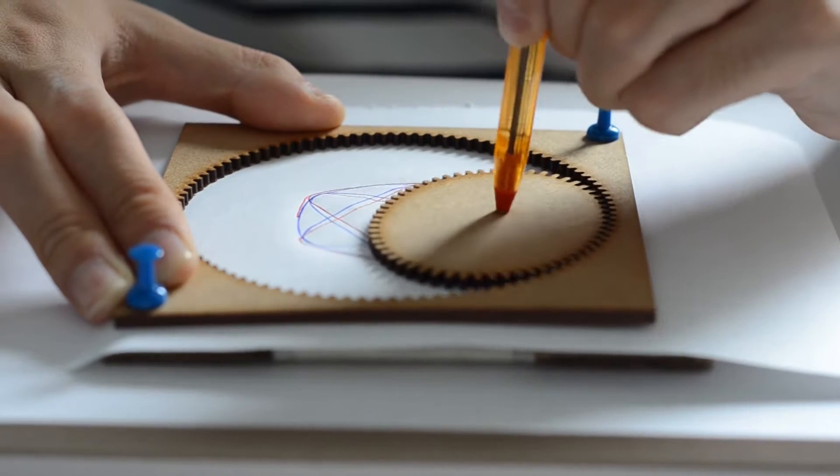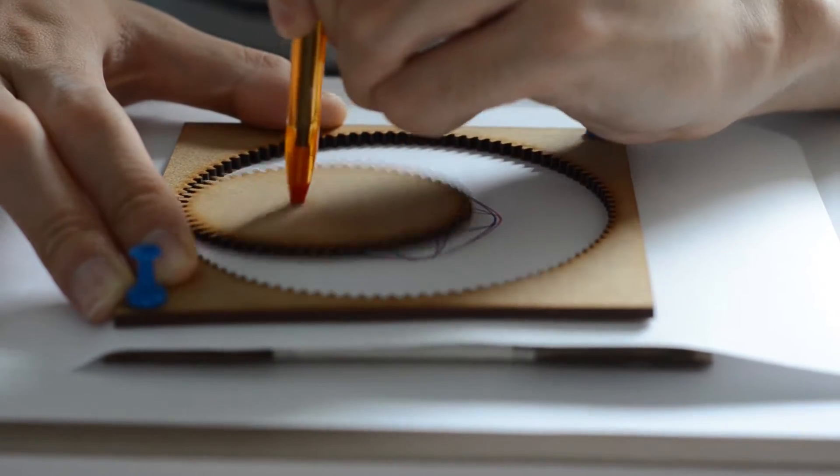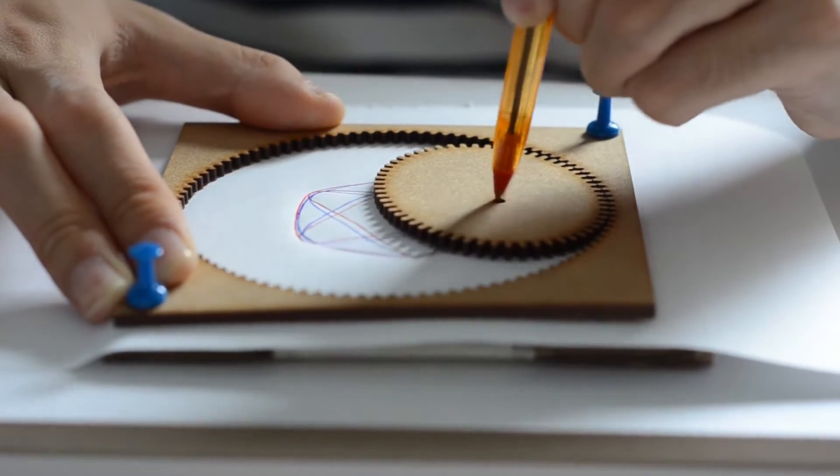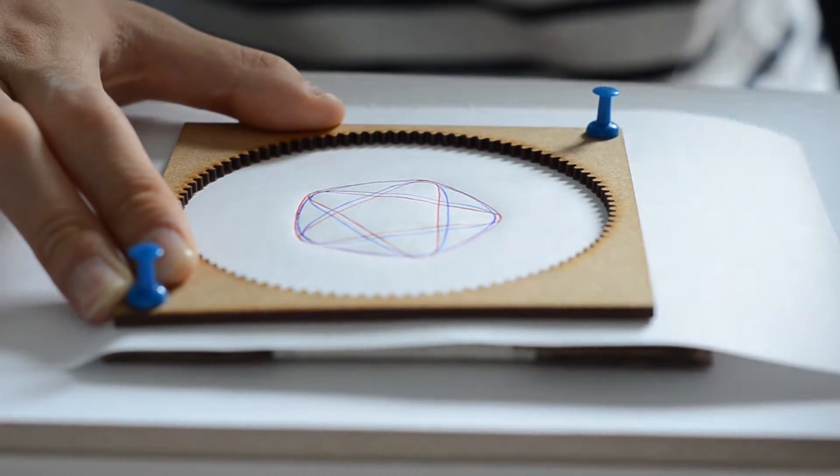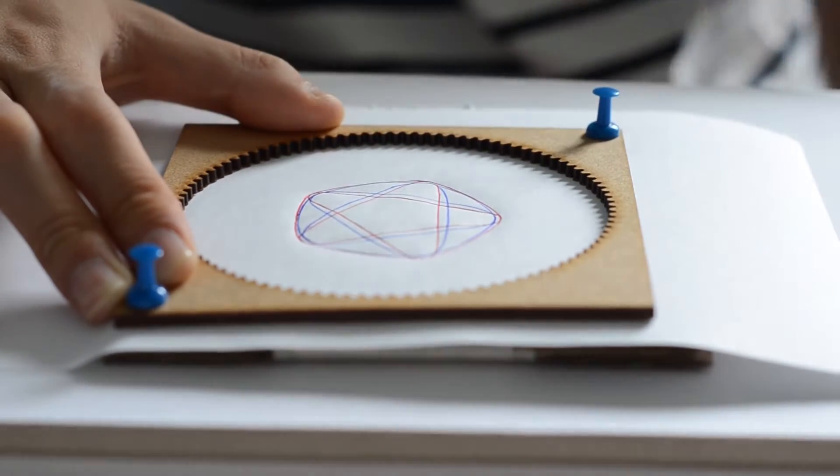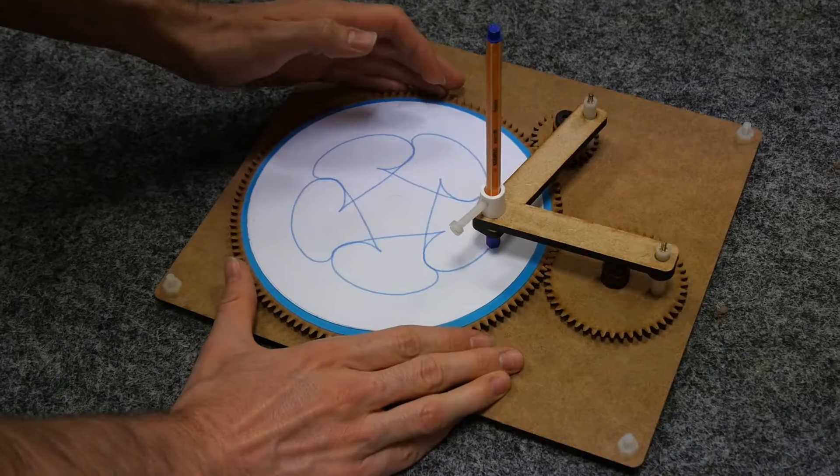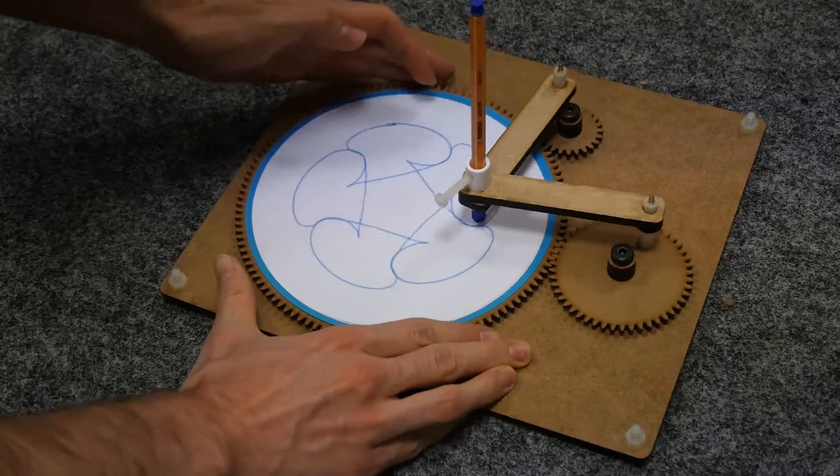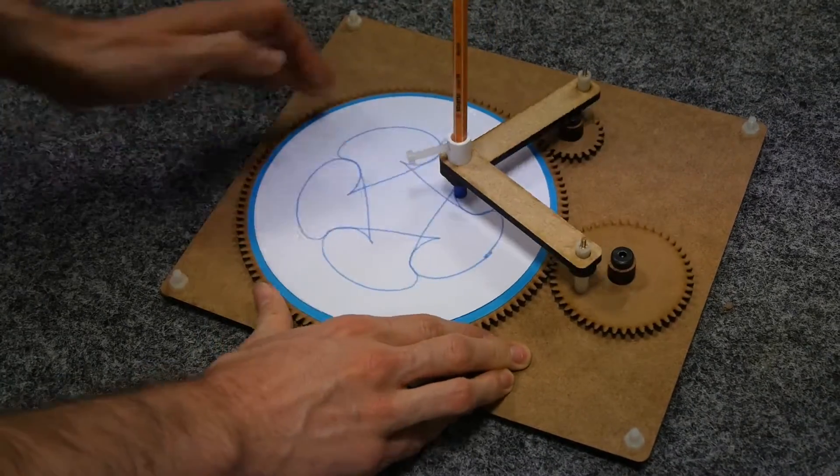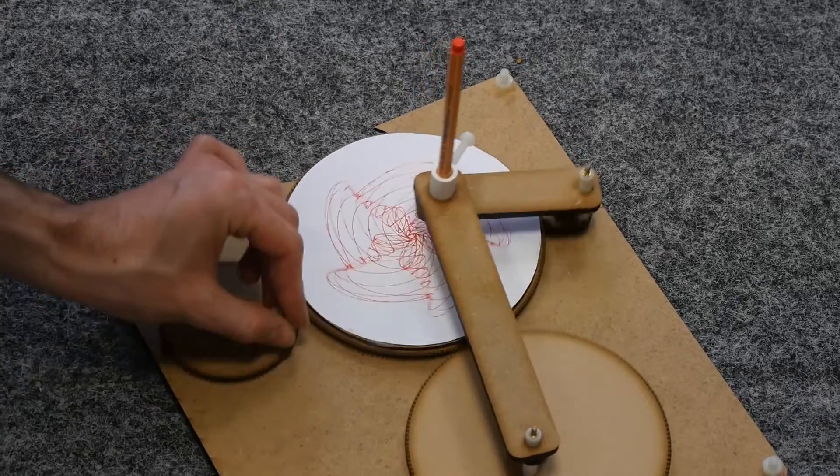To finish, we fabricated several prototypes to validate our method. This other example is a realization of the Hootnani toy. It involves three gears and two linkages.